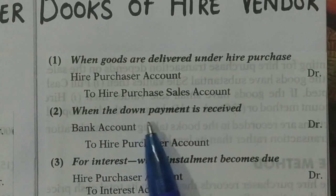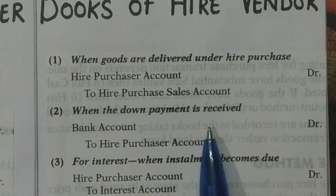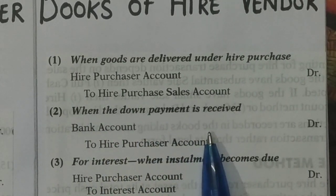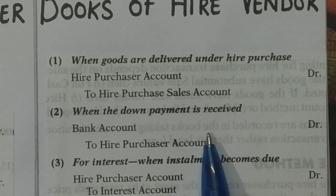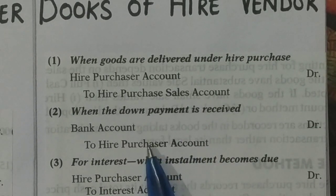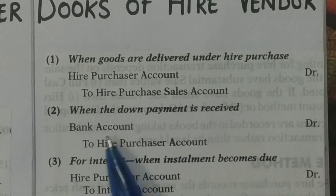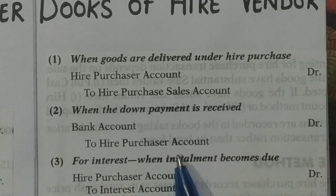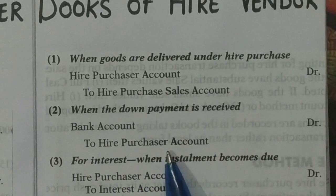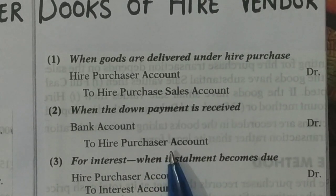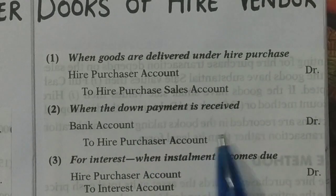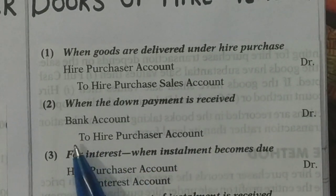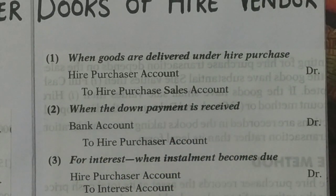The second entry is when the down payment is received — when the contract is signed and the first down payment arrives. Your bank balance is increasing. So: bank account debited to hire buyer account. The hire buyer is giving the money — credit the giver. So: bank debited to hire purchaser.